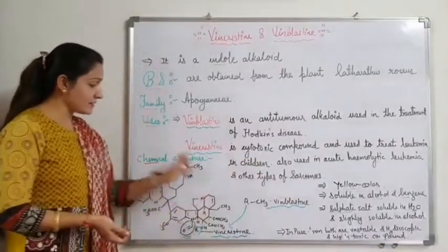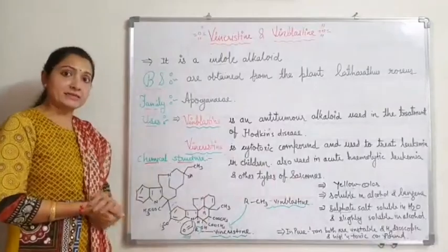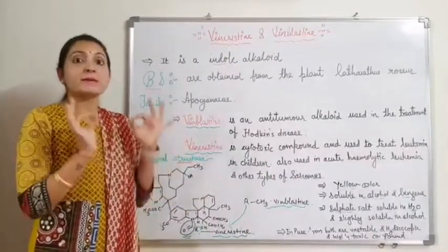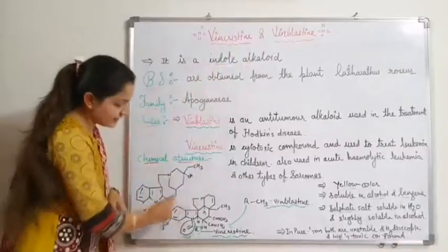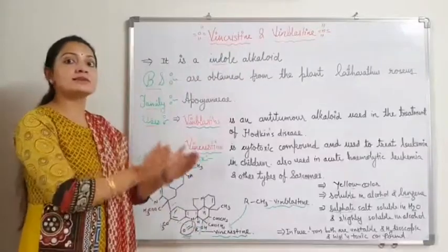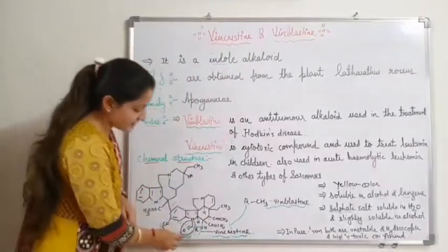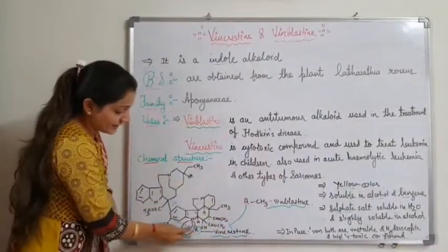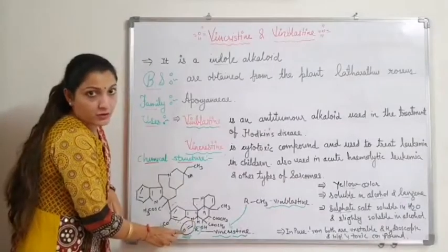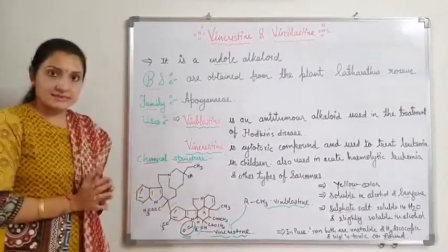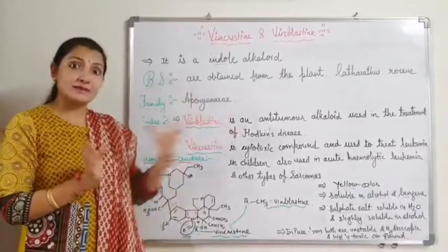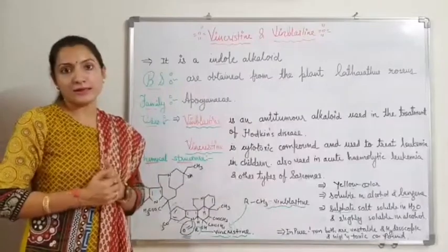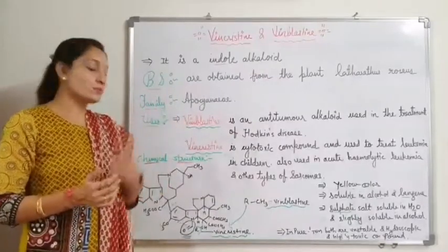This is the chemical structure of Vincristine and Vinblastine. Both have a similar structure, with only one group difference between them. Both contain an indole ring, so they are indole type alkaloids. The difference is: if the substituent group Ar is a methyl group, it is Vinblastine; and if Ar is a formyl group, it is Vincristine.